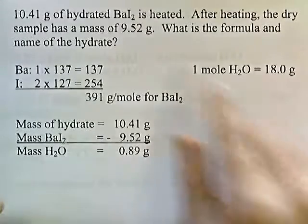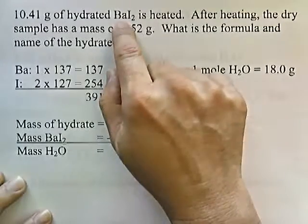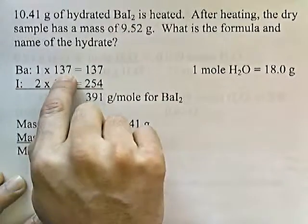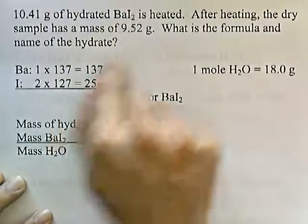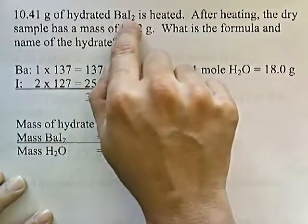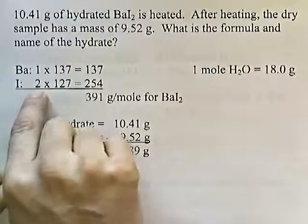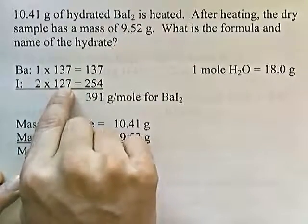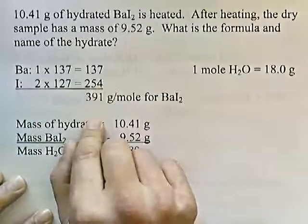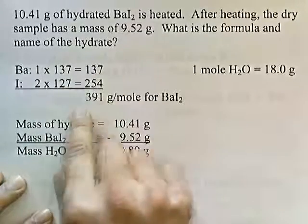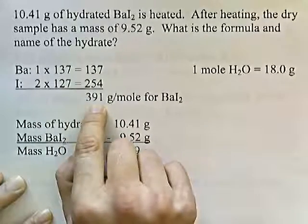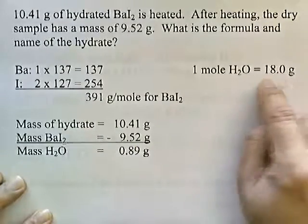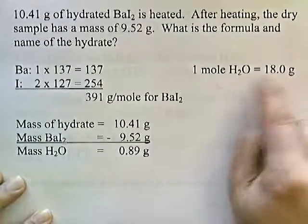So we have to figure out how much one mole of barium iodide weighs. One barium — barium is 137 on the periodic chart. I2: two iodides. Two times 127 — that's off the periodic chart — gives 254. Adding it all up: one mole of barium iodide is 391 grams per mole. And one mole of water is 18 grams per mole.